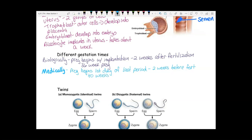If you count just from fertilization to birth, that time is 38 weeks — from conception to birth is 38 weeks. But doctors add an extra two weeks, starting from the first day of the last period, and say that it's 40 weeks.